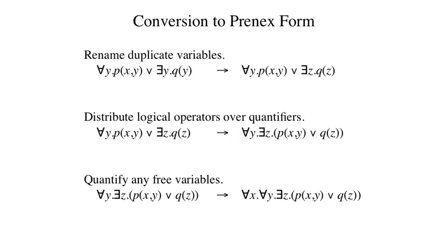In the second step, we apply quantifier distribution rules to move quantifiers outside of logical operators. Here we move the two quantifiers out. Finally, we universally quantify any free variables in our sentence. In this case, the variable X is free in the sentence, and so we add a universal quantifier for X.